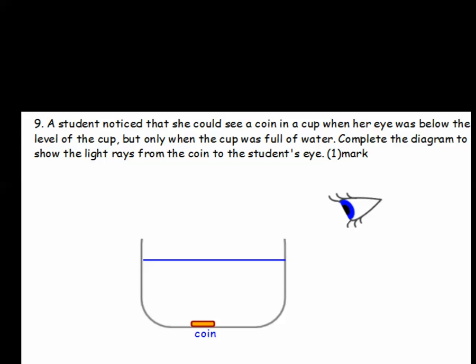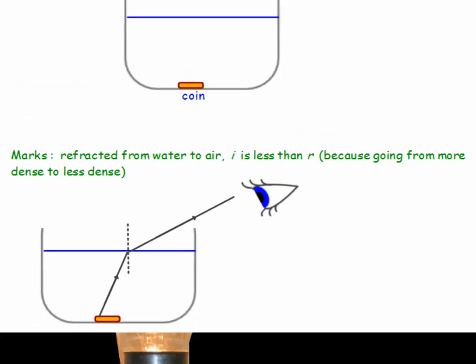Question 9. A student noticed that she could see a coin in a cup when her eye was below the level of the cup but only when the cup was full of water. Complete the diagram to show the light rays from the coin to the student's eye. And the correct answer. The light ray will be refracted from water to air. I is less than R because it's going from more dense to less dense media. And look at the arrows there. Make sure you've got an arrow going in the right direction.